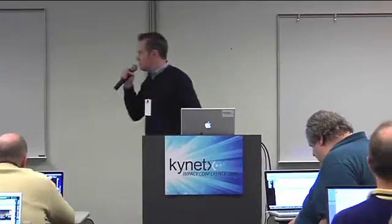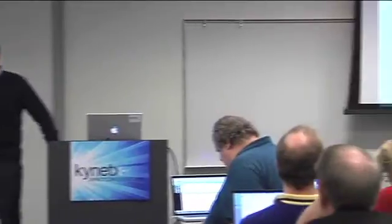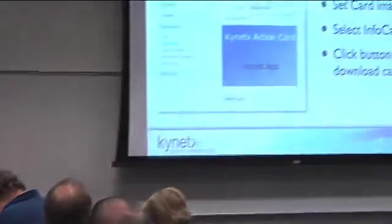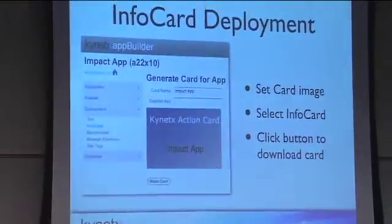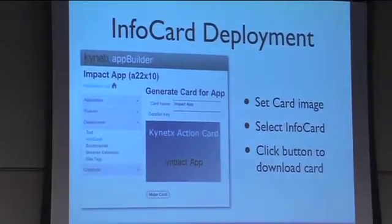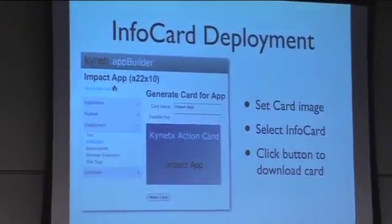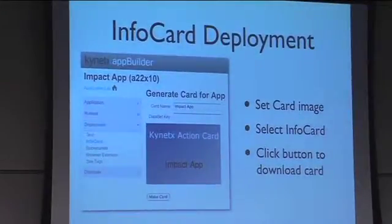The cool thing about an information card endpoint is that you have an endpoint platform — you're aggregating endpoints for other applications. As Sam showed you, you can simply generate information cards directly out of App Builder and download them or post them to App Directory. You can customize your image and do what you will with it after it's created.